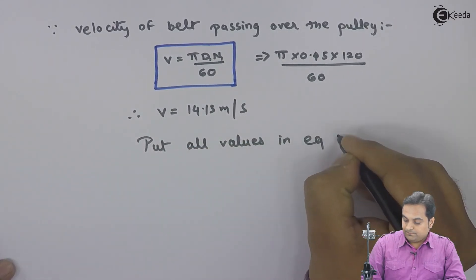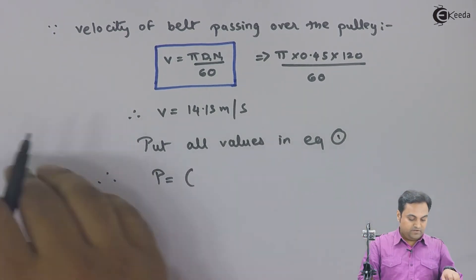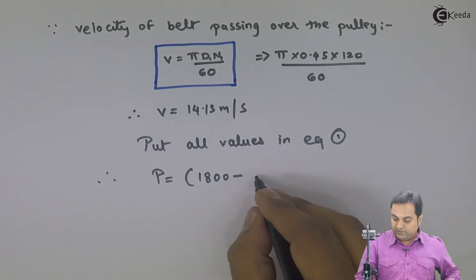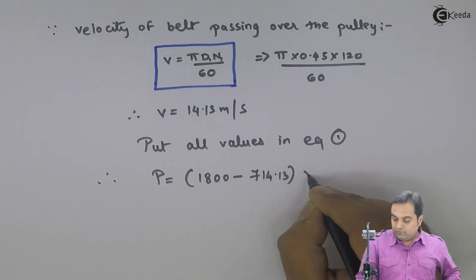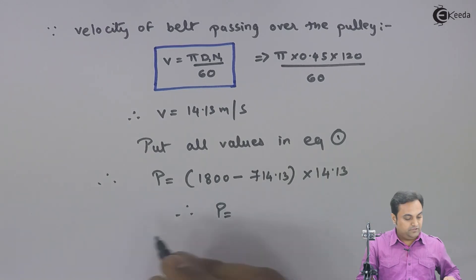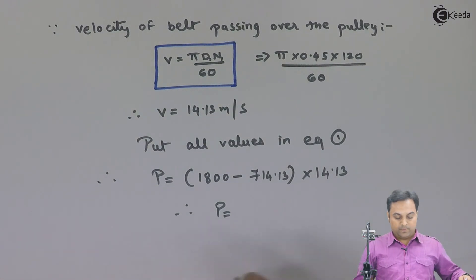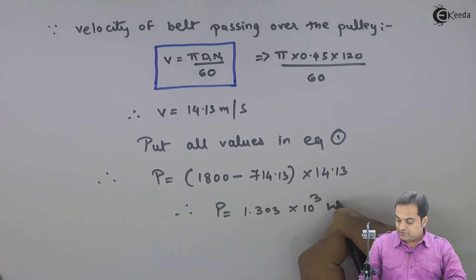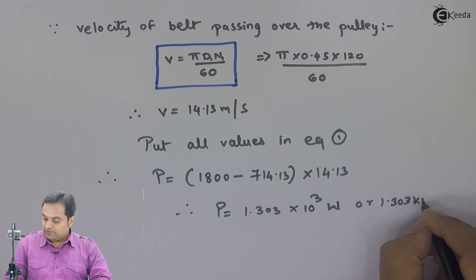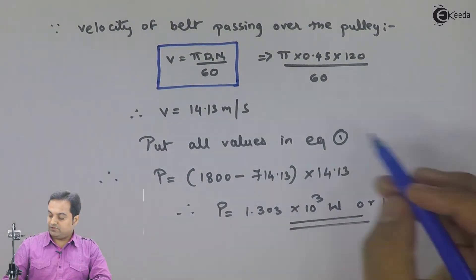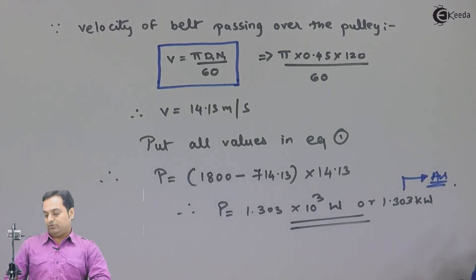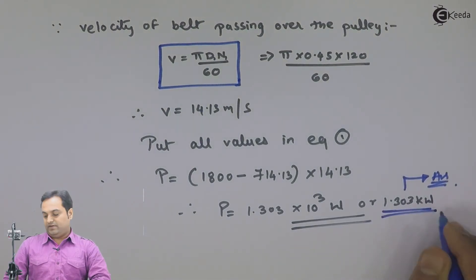Putting all values in equation 1: power equals T1 minus T2 into V, that is 1800 minus 714.13 into 14.13. This gives the value of power as 1.303 into 10 raised to 3 watts, or 1.303 kilowatts. So the amount of power transmitted by the belt drive is 1.303 kilowatts, and with this we complete the question.